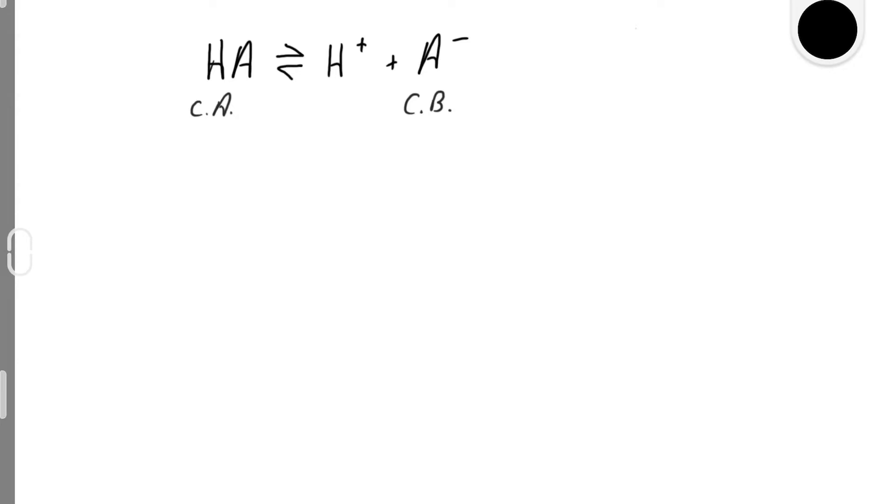These are the species that have to be present in order for a buffer to work effectively. If you add a small amount of base to a buffer solution containing HA and A-, the base will react with the HA. If you add a small amount of acid to this buffer, the acid will react with the A-.